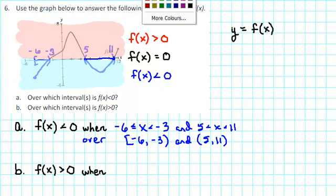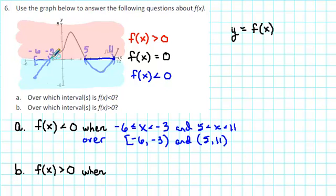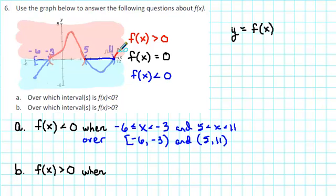Where is the graph above the x-axis? Where is f of x greater than 0? Moving from left to right, we see that the graph is below the x-axis until we get to negative 3. But then it goes above the x-axis between negative 3 and 5, so put parentheses at the ends. Then, where does it go above the x-axis again? It goes above the x-axis starting at 11 and ending at 12. So we'll put a parenthesis at 11 and a bracket at 12, because the function is actually above the x-axis there.